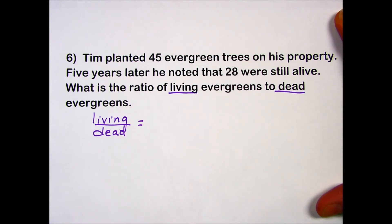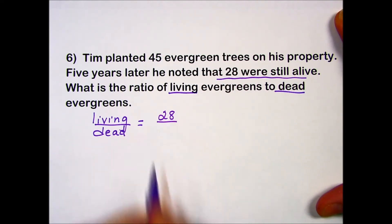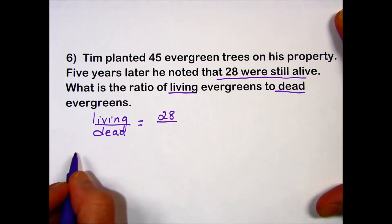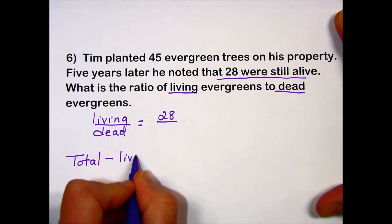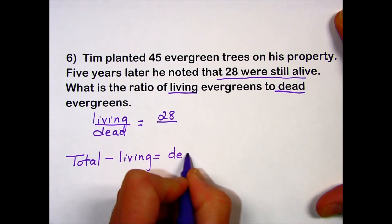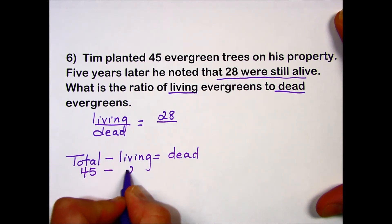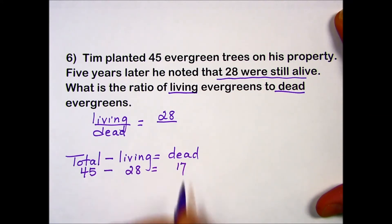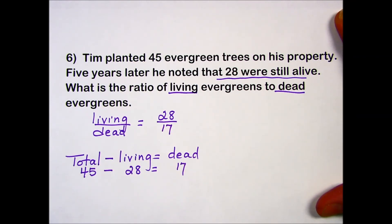Going back to find those values, the first sentence tells us the total number that were planted. Well, that's not part of the ratio of interest here, but it tells us five years later he noted that there were 28 still alive. That allows us to put a 28 in place of living. To come up with the dead: the plants are either alive or dead, so the total number of plants minus the living leaves us with the number of dead. There were 45 total plants; there are only 28 living, which means 17 died during that period. Nothing is common between the two, so our final answer is 28 to 17.